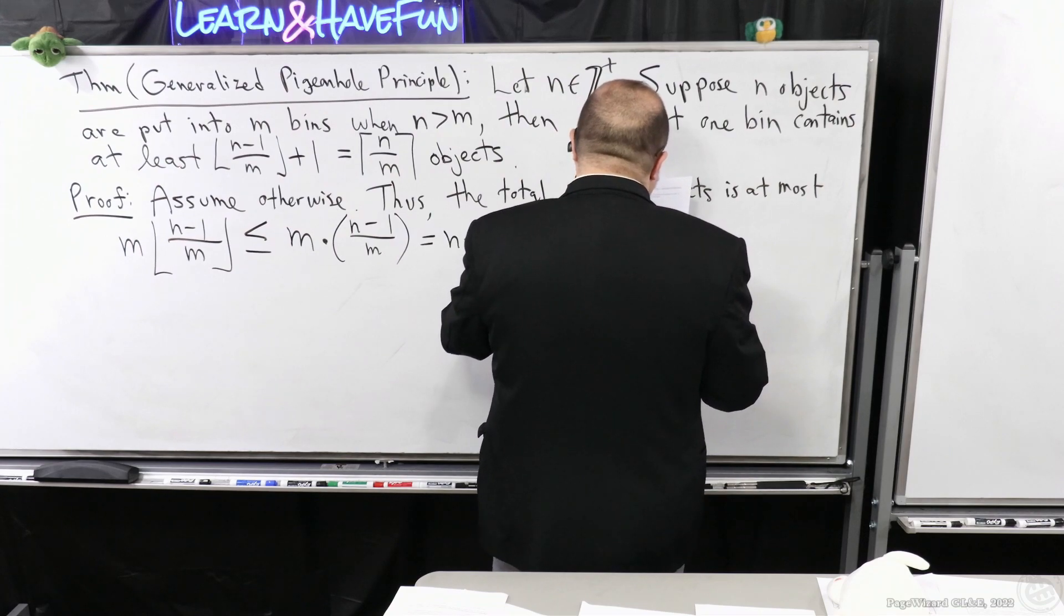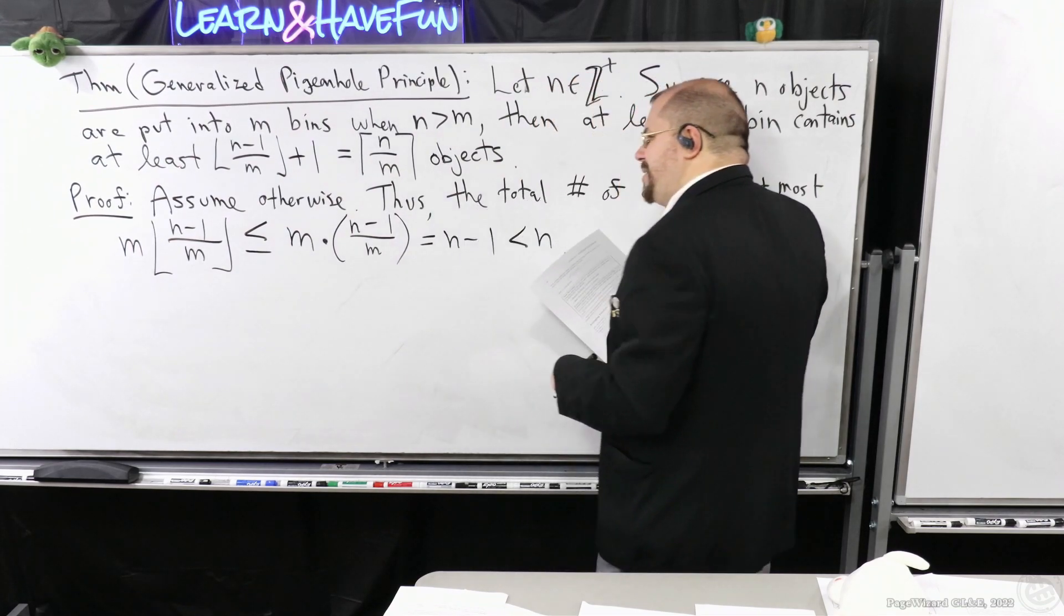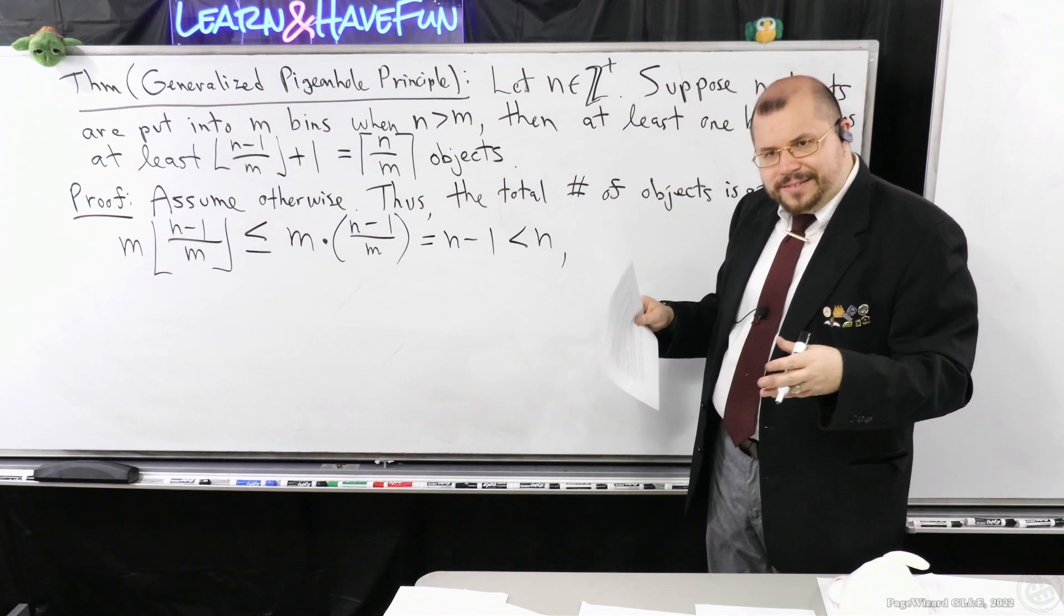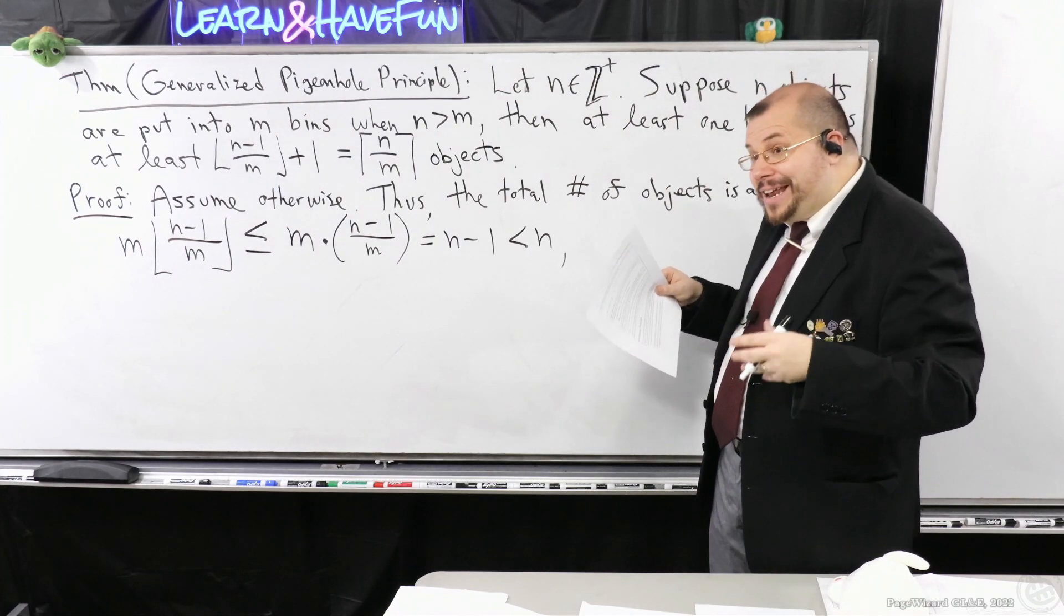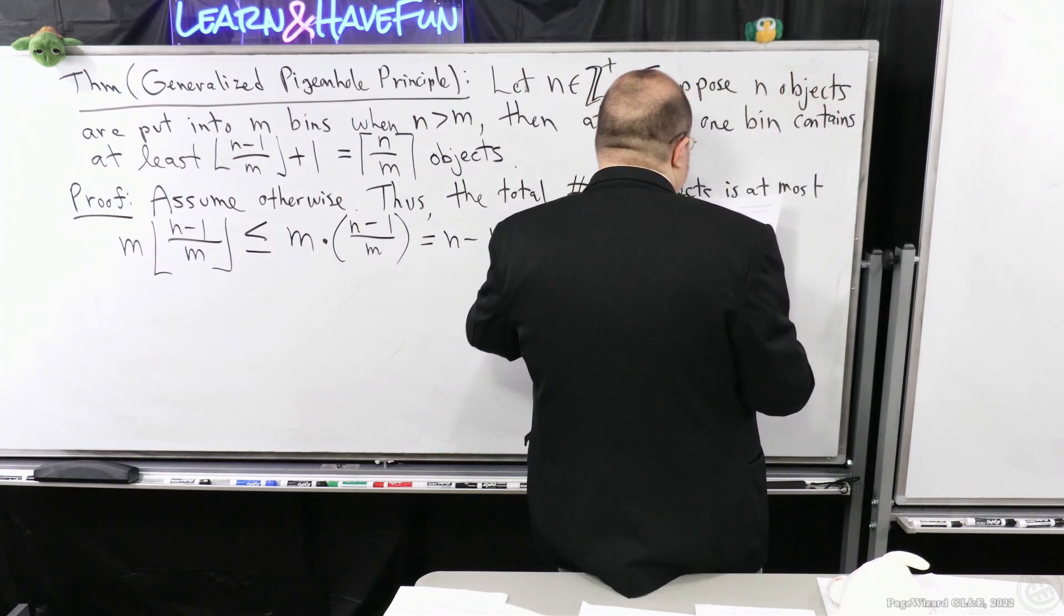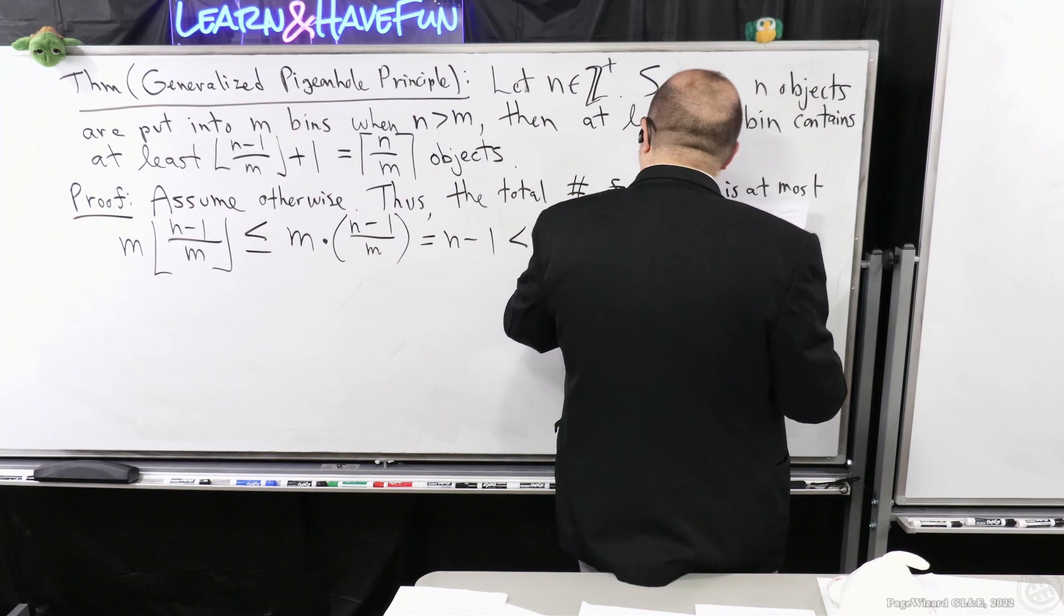But this is strictly less than n. That means that the number of objects isn't actually equal to the number of objects, in fact it's less than that. So the bin actually contains less objects than there actually are objects, there just isn't enough room. Which is a contradiction.